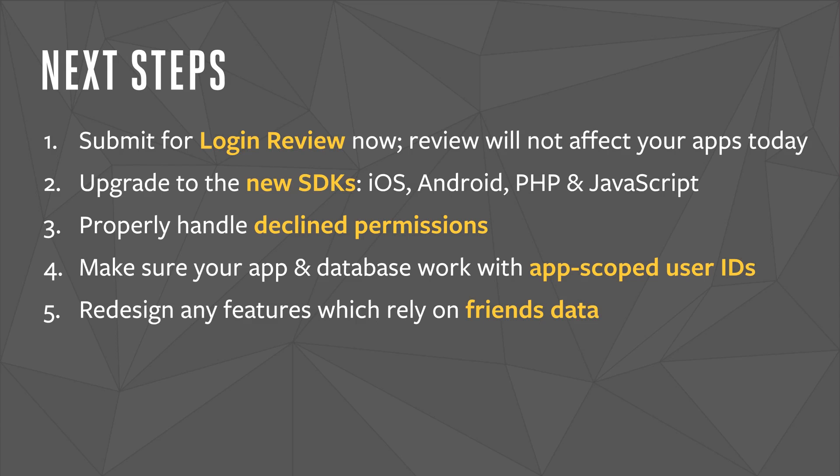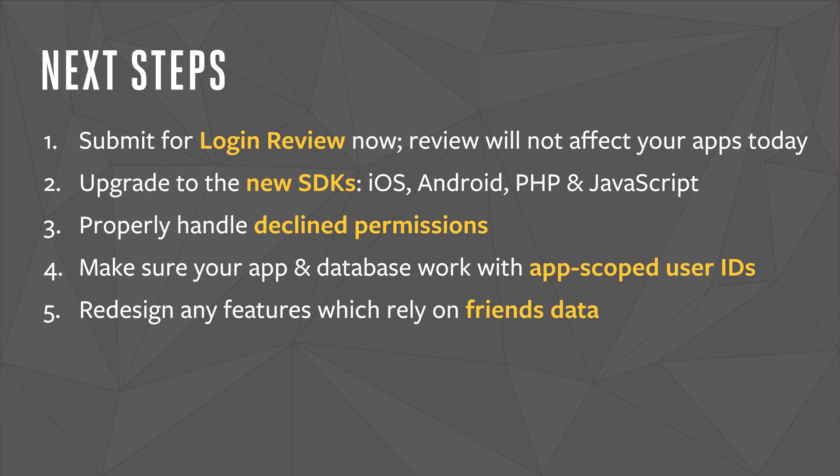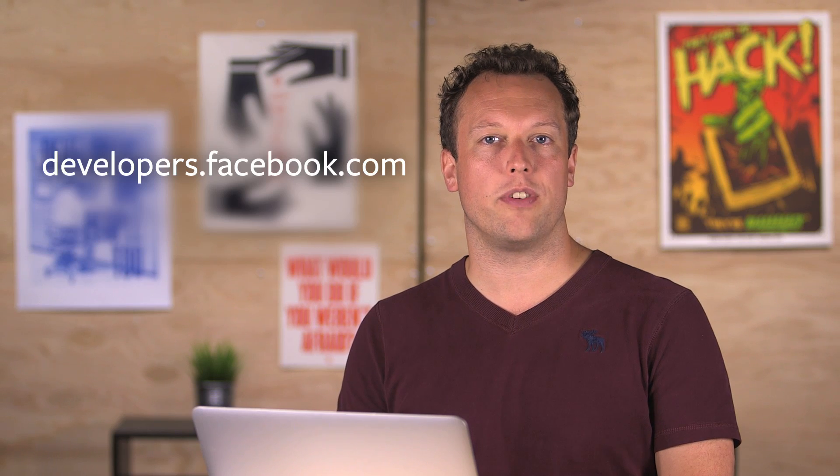Fifth, if parts of your app rely on accessing friends data, you might want to redesign these features to ensure they'll still work come April 30, 2015. Lastly, if you have iOS or Android apps, we strongly recommend you ship an upgraded version of your app to the App Store or Google Play before the December 25 holiday. This will ensure most of the people who use your app have had a chance to update before all Facebook-integrated apps are automatically upgraded to V2.0 on April 30, 2015. For more information, please check out the comprehensive upgrade guide and changelog on developers.facebook.com. If you have questions, please join the Facebook Developers Group where members of our engineering, product, review, and partnerships teams may be able to answer your questions directly. Thanks for taking the time today — we really appreciate you upgrading your apps to Graph API V2 and the new Facebook login.